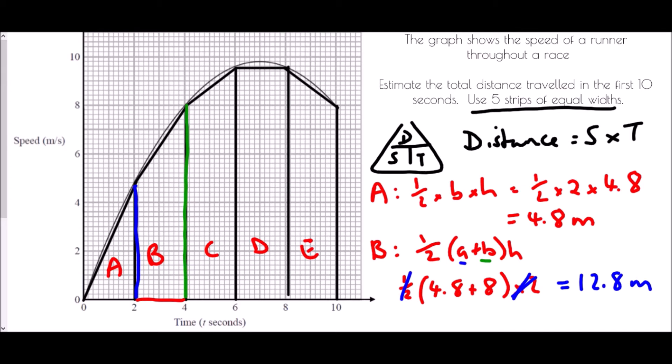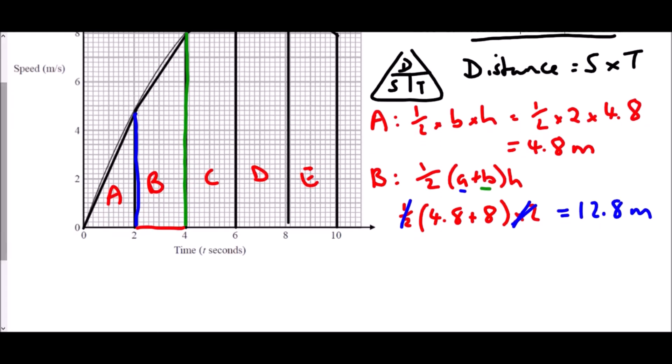And so in the first section here, B, the first trapezium, we travelled 12.8 metres. In C, we need to do the same again. It's a half times A plus B times H. But again, it's going to be a half times 2, because the height in every case here is 2 seconds. Therefore, we can actually just say A plus B.